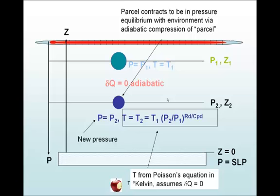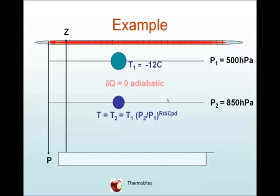So let's do a calculation. Consider a parcel at pressure P₁ of 500 hectopascals, and it's going to descend dry adiabatically to a pressure of 850 hectopascals. It starts with a temperature of minus 12 degrees Celsius. What will its final temperature be?